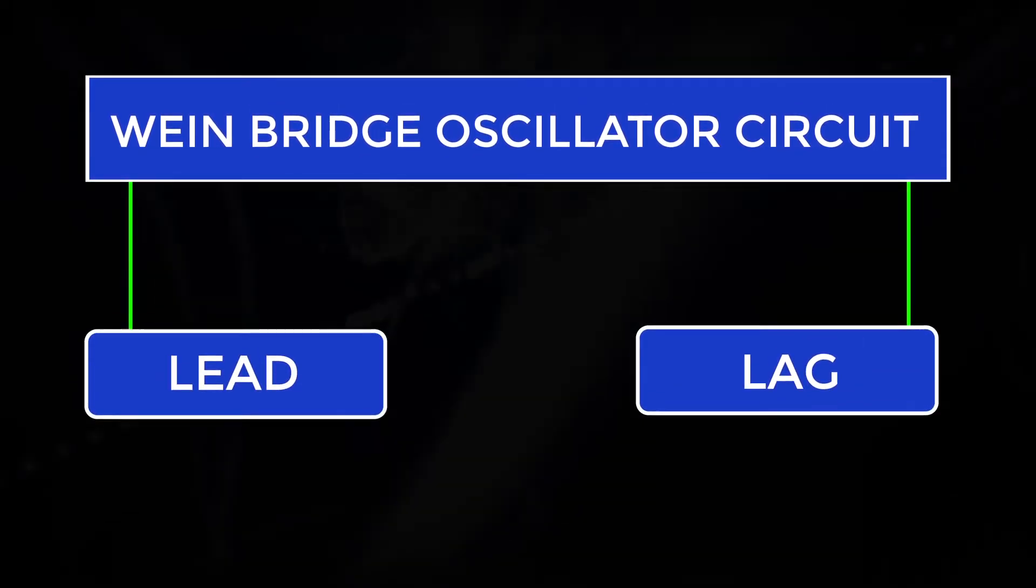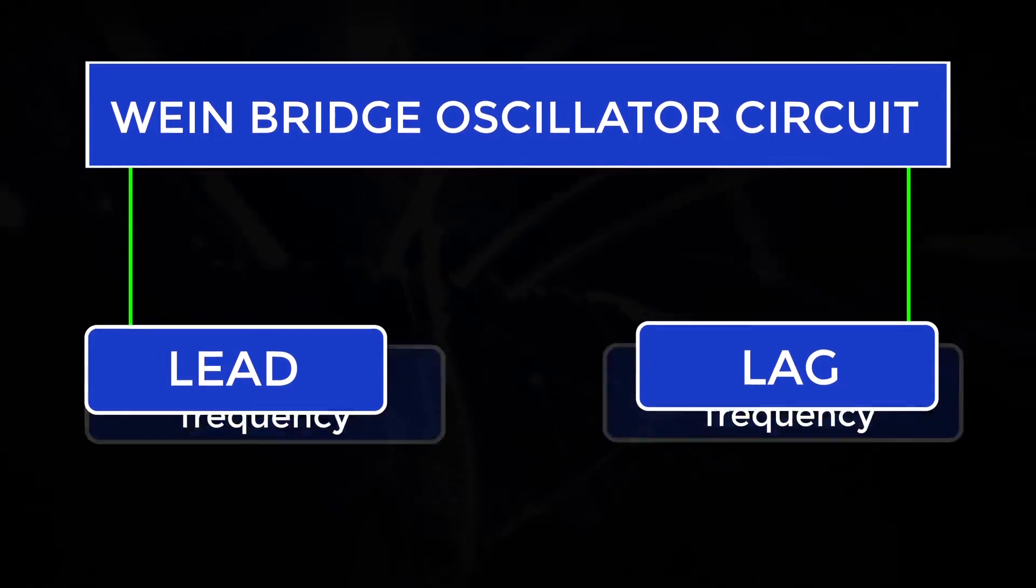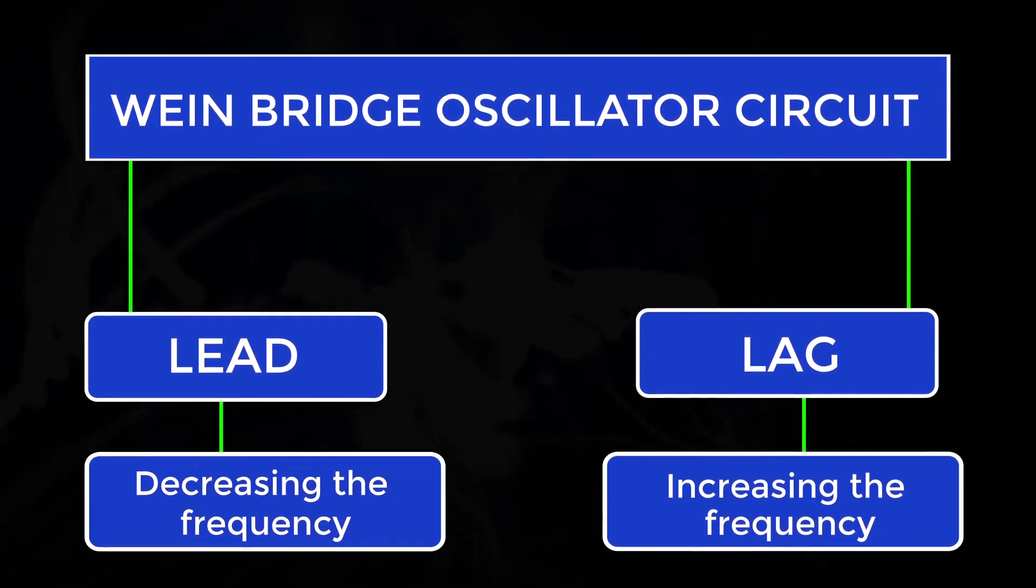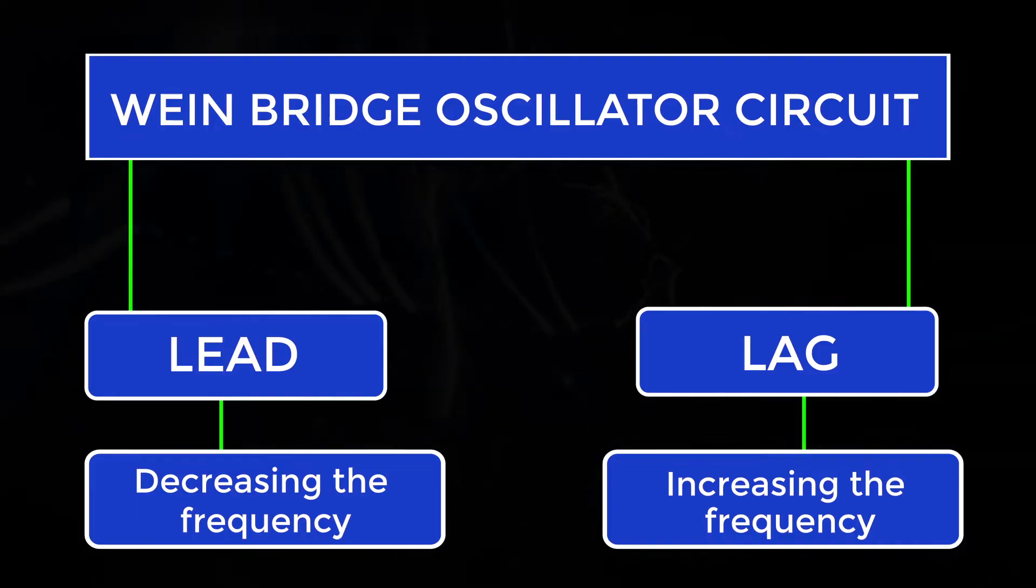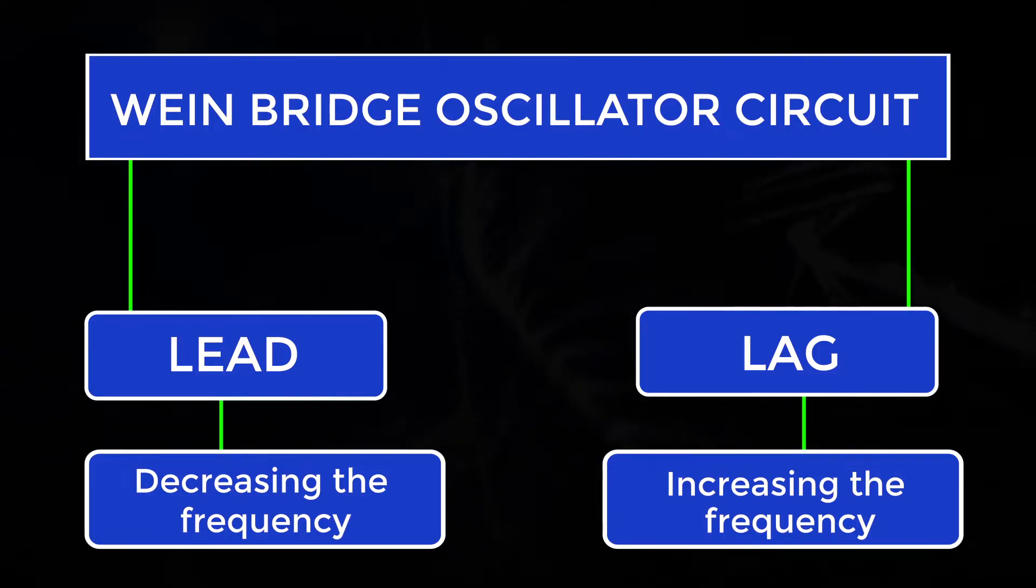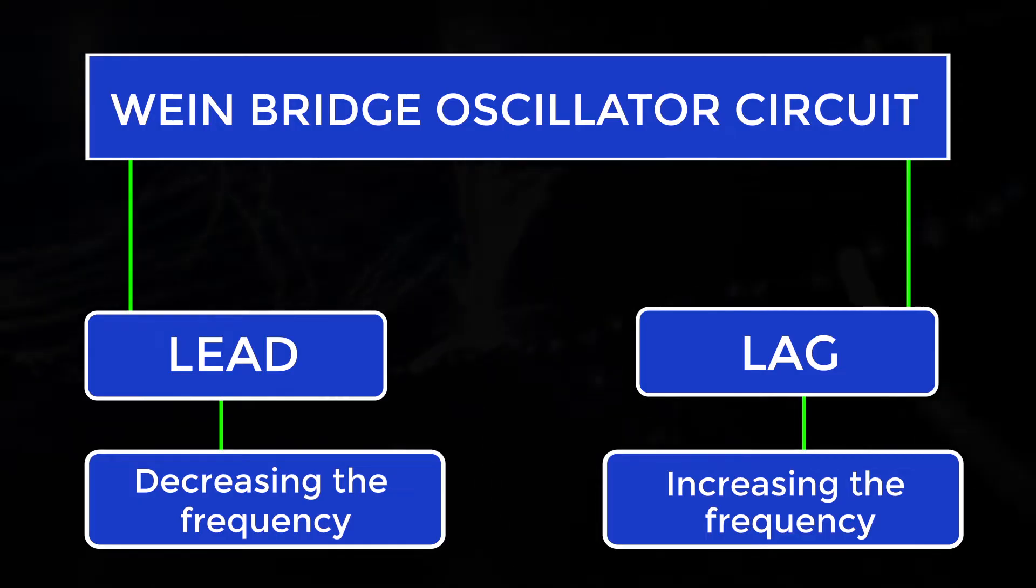It is a two-stage amplifier with RC bridge circuit and the circuit has lead-lag networks. The lags at the phase shift are increasing the frequency and the leads are decreasing the frequency. At this frequency, the Wein Bridge is balanced at the phase shift of 0 degrees.